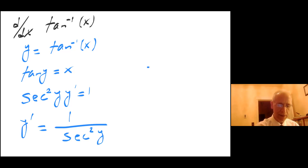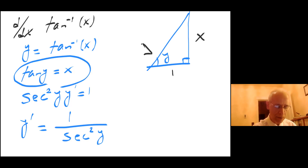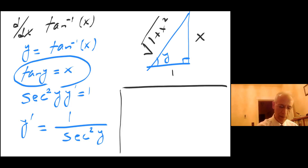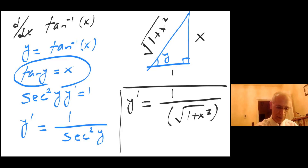Looking at the triangle, if this is my angle y and tangent of y equals x, by definition tangent is side opposite over adjacent, so this leaves me with a hypotenuse of square root of 1 plus x squared. So y prime equals 1 over secant squared of y. Secant is 1 over cosine, and cosine in this case is the adjacent over hypotenuse, which is 1 over square root of 1 plus x squared. Remember we have secant to the second power, so y prime equals 1 over 1 plus x squared.